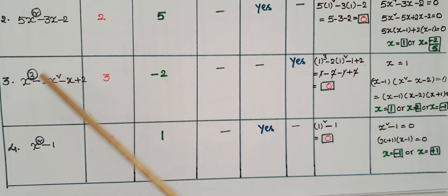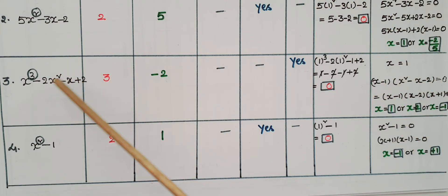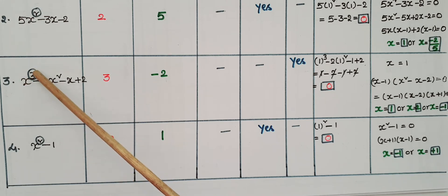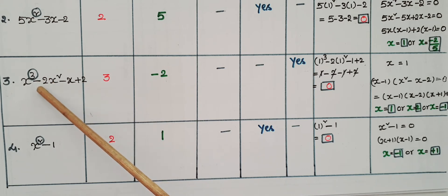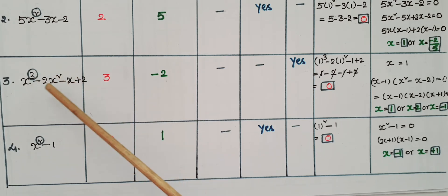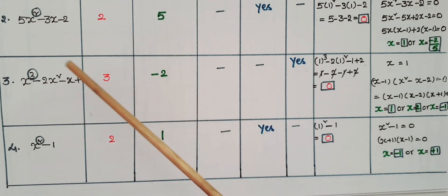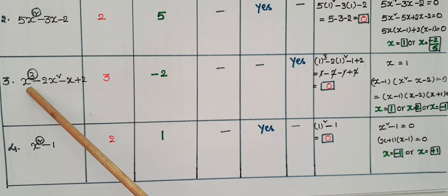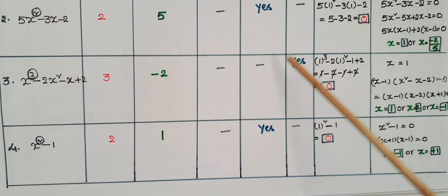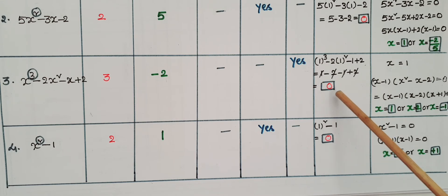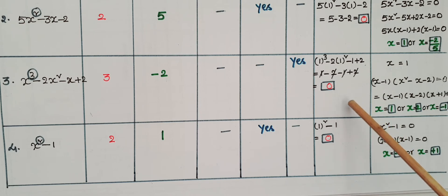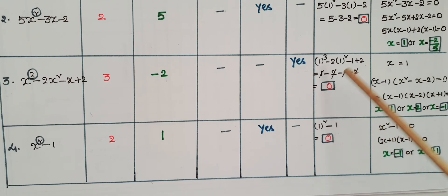The next example is x cube minus 2x square minus x plus 2. The variable is x and the highest power is 3, so the degree is 3. The coefficient of x square is minus 2. It is a cubic polynomial. The value of this polynomial if x is equal to 1: 1 cube minus 2 into 1 square minus 1 plus 2 is equal to 0. Since the value is 0, x equals 1 is a zero of this polynomial.